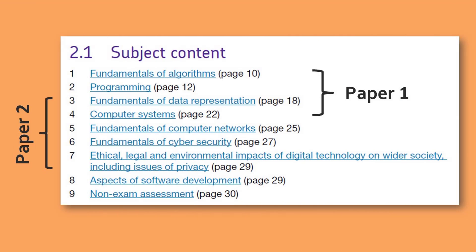Of the two exams, paper 1 is more application based but still requires you to have learnt and revised theory on algorithms, programming, data representation — which is a huge topic — and hardware and software. Paper 2 is more traditional but overlaps with paper 1, which could be a good thing. It also includes topics on networks, security, and wider impacts of computing, which are all big topics as well. You can't use a calculator in either exam, although the maths is not going to be particularly challenging.